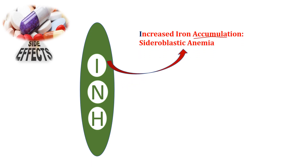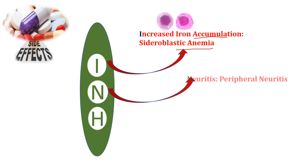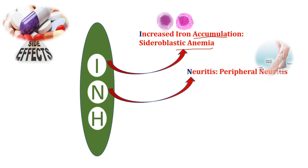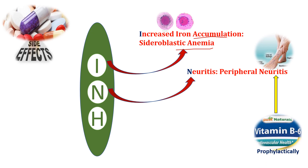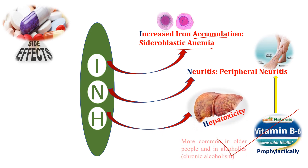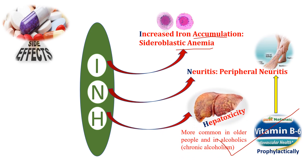The main side effects of isoniazid can be easily remembered from its name itself. I stands for increased iron accumulation resulting in sideroblastic anemia. N stands for neuritis or peripheral neuritis, and this problem can be overcome by giving vitamin B6 prophylactically. H stands for hepatotoxicity, and this problem is more common in elderly people and in alcoholics.